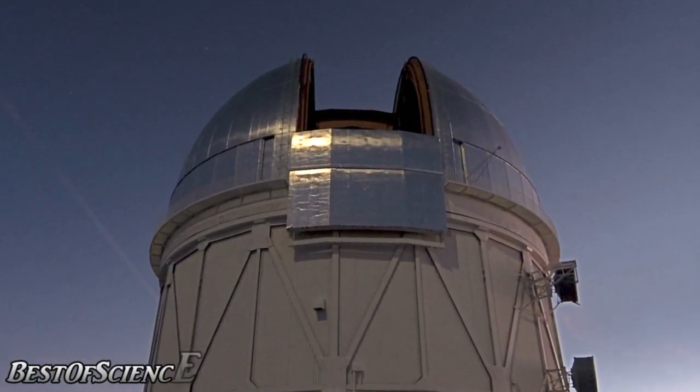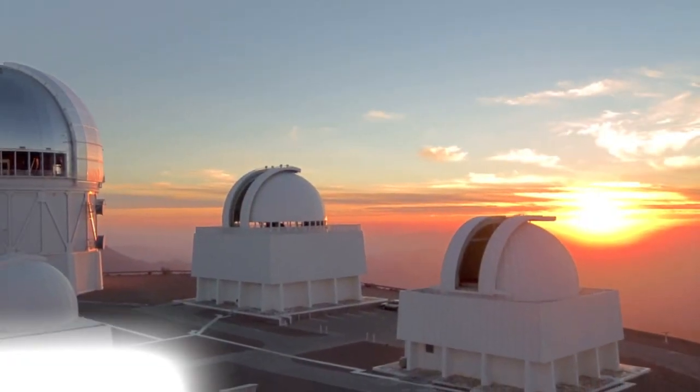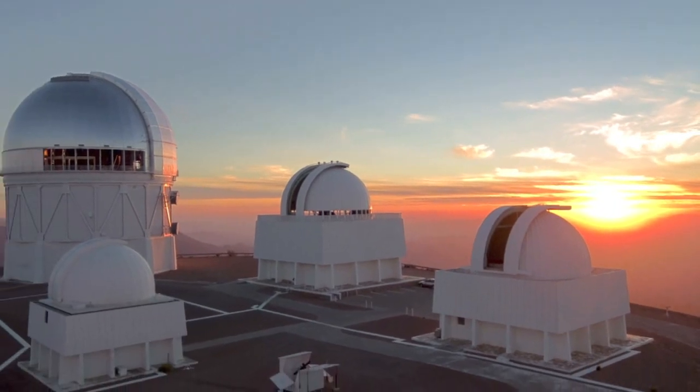How is a telescope like a time machine? Even at 186,000 miles per second, light takes time to travel across the vast distances of space. Looking out into space means you're looking back in time.